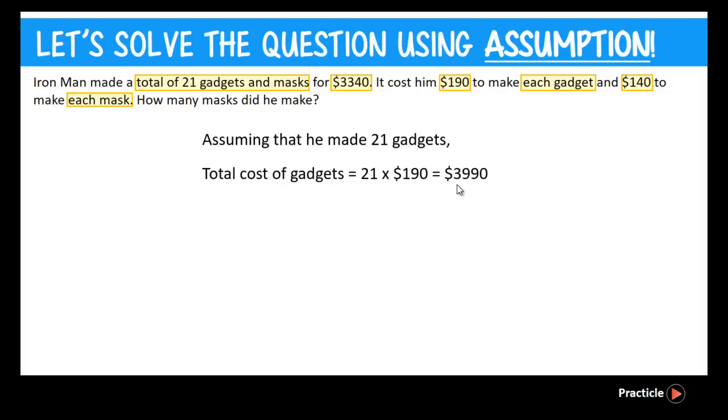I'm not too sure if any of you noticed something weird here, because if you were to read the question earlier on, we know that Iron Man spent a total of $3,340, correct? But here, when we are calculating, we realize that the total cost of 21 gadgets is actually $3,990. So it's far more than what he actually spent.